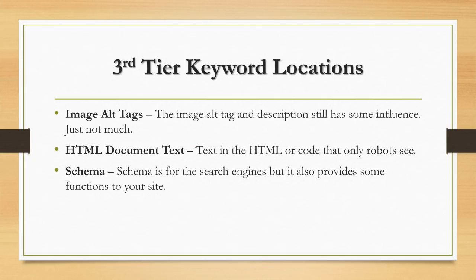The third tier of keyword locations includes both older and newer items. The first two are somewhat dated and don't have as much impact as they used to. Image alt tags are simply a label or title for your image saved to your web page. If you title your images to relate to or directly contain your keyword, it can still have a modest positive impact — so it's worth doing if you have time, especially in a competitive keyword space.